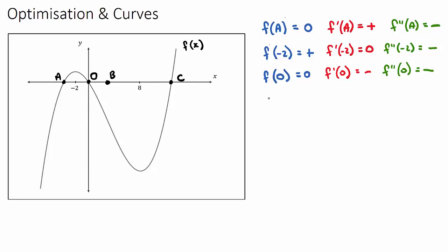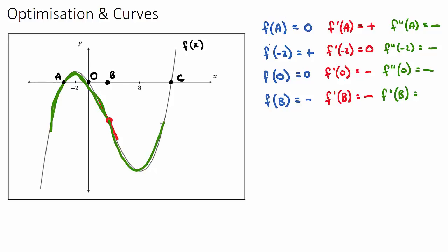f(b) means when x is at point B, what is the y value? It will be negative. f'(b): at point B the slope is going down, so we have a negative slope. The double derivative is an interesting one — is point B part of the negative or positive concavity? It looks to be right in the middle. With no concavity, it is a point of inflection, and that is when the double derivative equals 0.